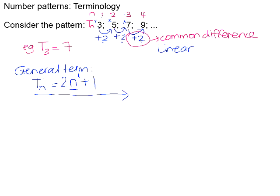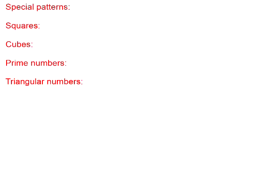Let's take a look at some special patterns. The first is the pattern of square numbers — literally just squaring 1, squaring 2, squaring 3, and so on: 1 squared is 1, 2 squared is 4, 3 squared is 9, 4 squared is 16, 5 squared is 25, and we could carry on. So whenever you see a pattern that looks like this, be aware that it is the pattern of square numbers.